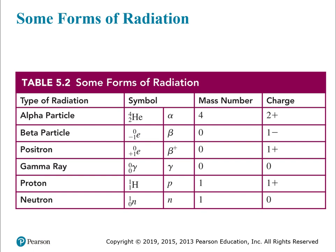This table is very helpful — you'll need to know all the different types of radiation. In addition to the ones outlined, you can also have protons or neutrons released in stabilizing a nucleus, and we'll talk about that a little later on.